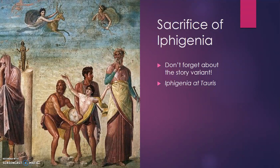I wanted to pull up this picture of the sacrifice of Iphigenia found on a wall in Pompeii and remind you that there's a story where Iphigenia is substituted at the last minute for a deer and is taken up into the heavens by the gods. Euripides actually writes another play called Iphigenia at Tauris, which speculates that when Iphigenia was taken up by the gods she was transported to another city called Tauris and is later discovered by her brother there.